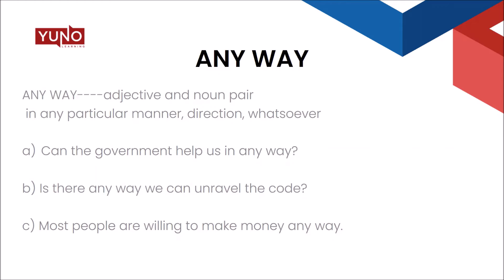These examples further elaborate the meaning: 'Can the government help us in any way?' — means in any particular way or manner. 'Is there any way we can unravel the code?' — any particular strategy or mechanism by which this code can be decoded. 'Most people are willing to make money any way' — right, wrong, ethical, unethical, correct, incorrect — they just want to make money by any particular means or manner. So after this set of three words: 'anyway', 'anyways', and 'any way' as two separate words.